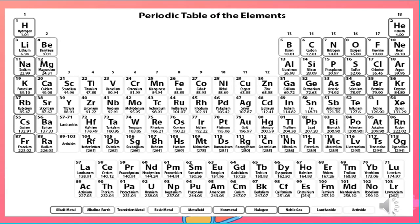This is the periodic table of elements. In the original periodic table, it was published by Dmitri Mendeleev in 1869. This is a table wherein you can see different information about the element: the atomic number, element symbol, element name, and atomic weight. Gamit din ang periodic table, malalaman mo rin kung ang isang element ay metal, non-metal, or metalloid depende kung saan nakapuesto ang element.